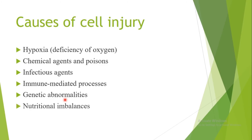Another cause is nutritional imbalances, which refers to both under-nutrition and over-nutrition. Under-nutrition or protein-energy malnutrition is common in developing countries, while over-nutrition is common in developed countries. For example, obesity is an important cause of type 2 diabetes. So nutritional imbalances encompass both extremes.